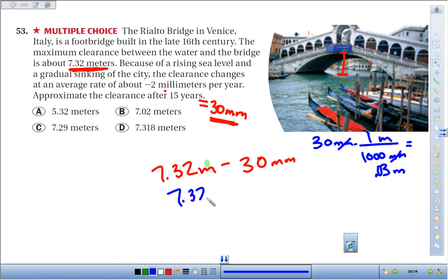So we've got 7.32 meters minus 0.03 meters. Now we can compare them. 7.32 minus 0.03 is 7.29 meters, which is going to be letter C.